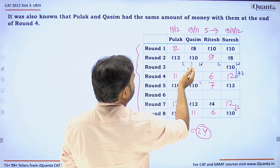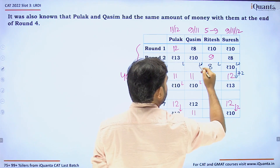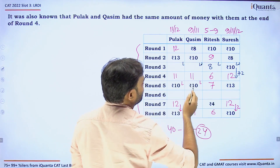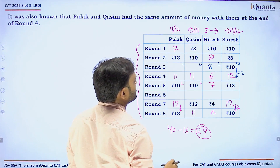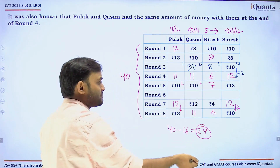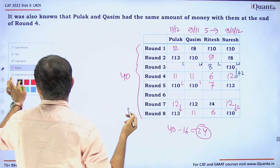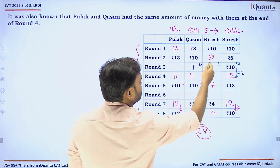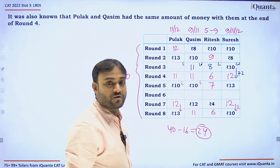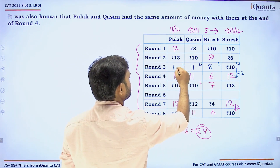If Ritesh lost 1 rupee, his Round 3 value is 8; Kasim must have won, and the only valid value for Kasim (9 or 11) where he wins from Round 2's 10 is 11. So Kasim won 1 rupee (amount = 11), Ritesh lost 1 rupee (amount = 8), and Pulak lost 2 rupees (amount = 11). This satisfies the sum constraint for Round 3.